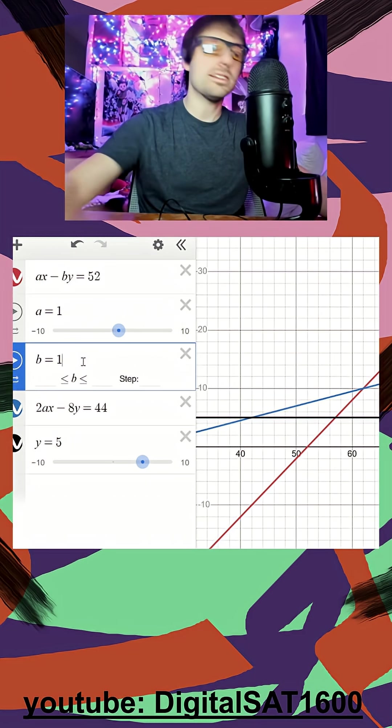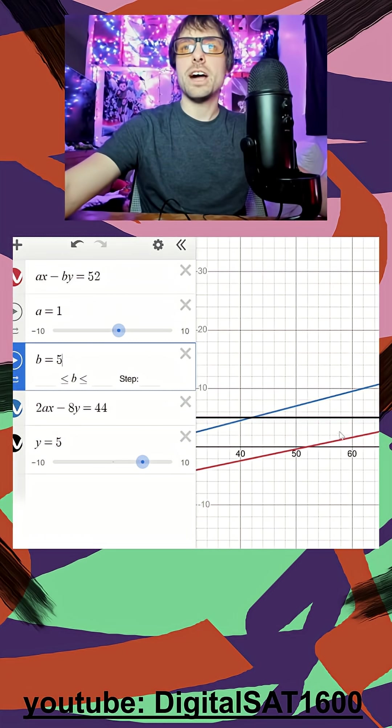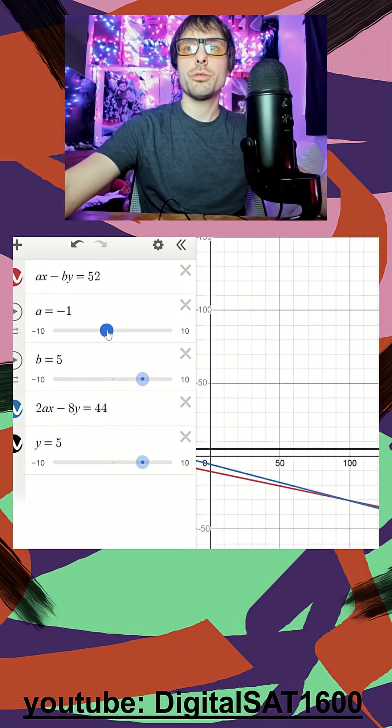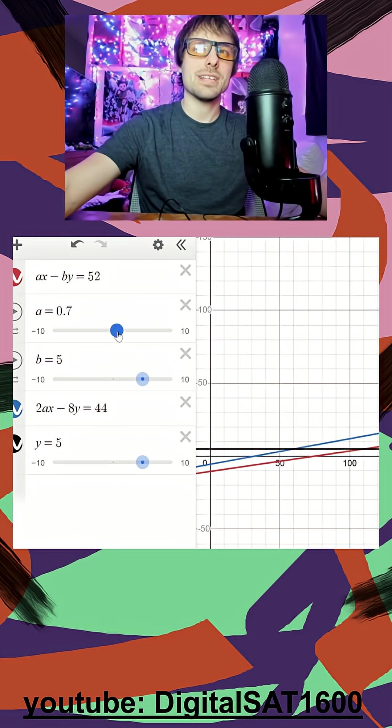We're going to start with, when b is equal to 5, can I find a point where these intersect? So I'm going to zoom out a lot. And I'm going to scroll through values of a to see if it looks like they're going to intersect.